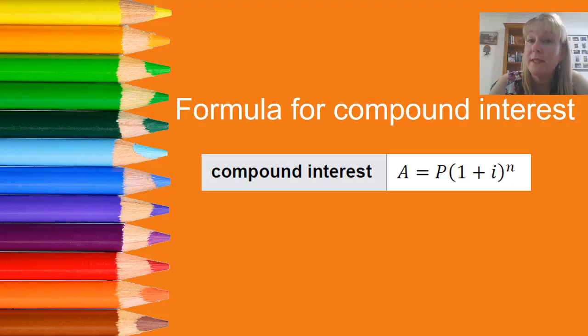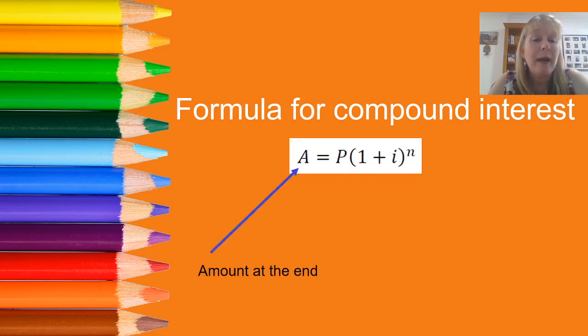Our formula is taken from the QCAA formula sheet. A equals P brackets 1 plus i to the power of n and that power indicates to us that it's exponential. There are different parts to this formula. The first part is A. That is our amount at the end of the investment or the loan.